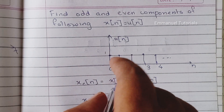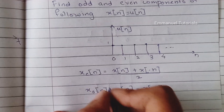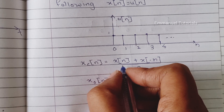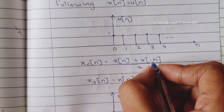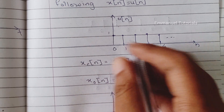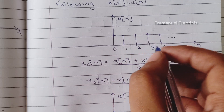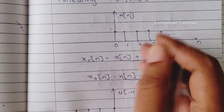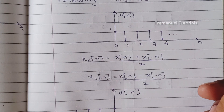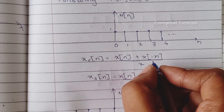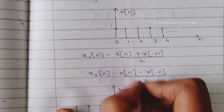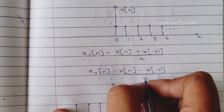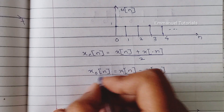Now to find the even and odd parts, the even part is computed by taking x(n), adding x(-n) which is the reversed version of the signal, and then dividing by 2. Similarly, for the odd part we use x(n) minus x(-n) and divide by 2.